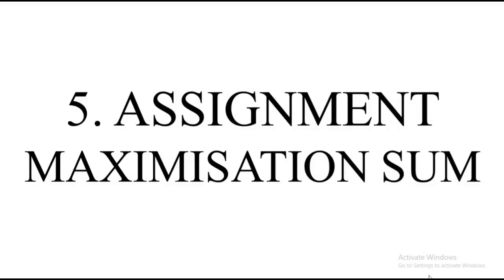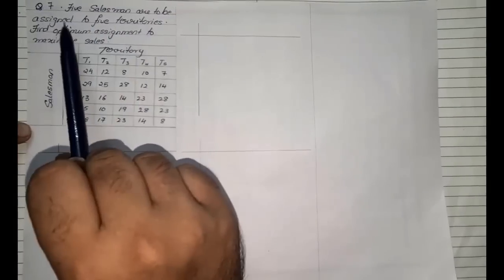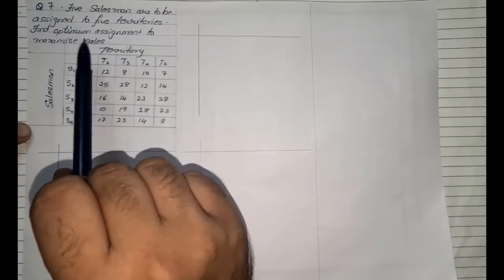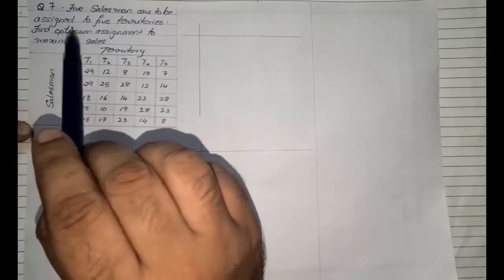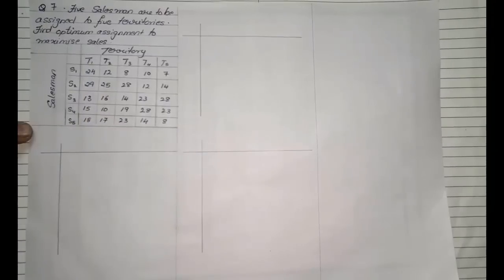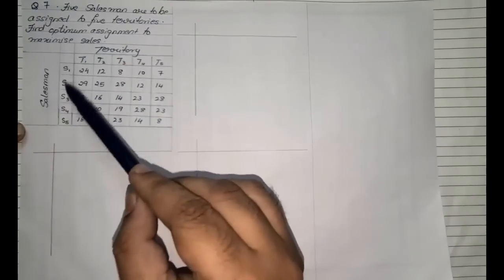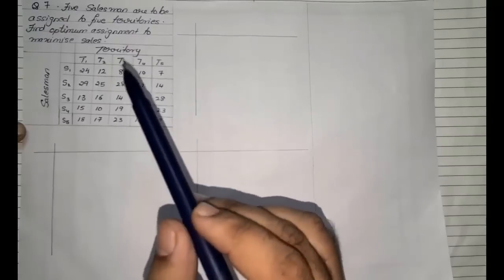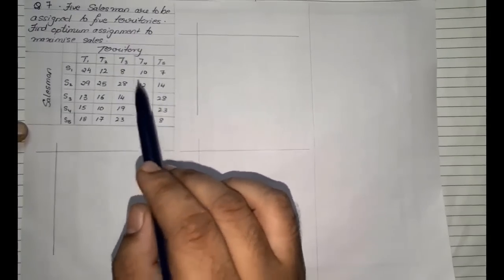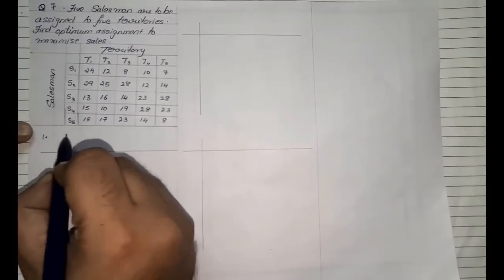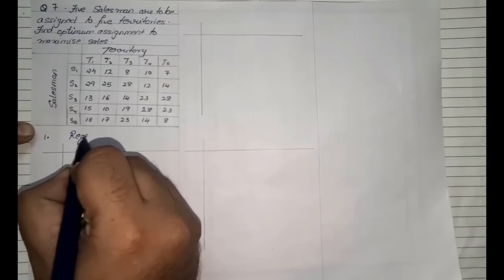The fifth type of sum is again from the Assignment Model. Under this topic, we are now going to solve the sum based on maximization — the previous one was minimization. The problem is: 5 salesmen are to be assigned to 5 territories; find the optimum assignment to maximize the sales. There are 5 territories and 5 salesmen, so it is a balanced program.